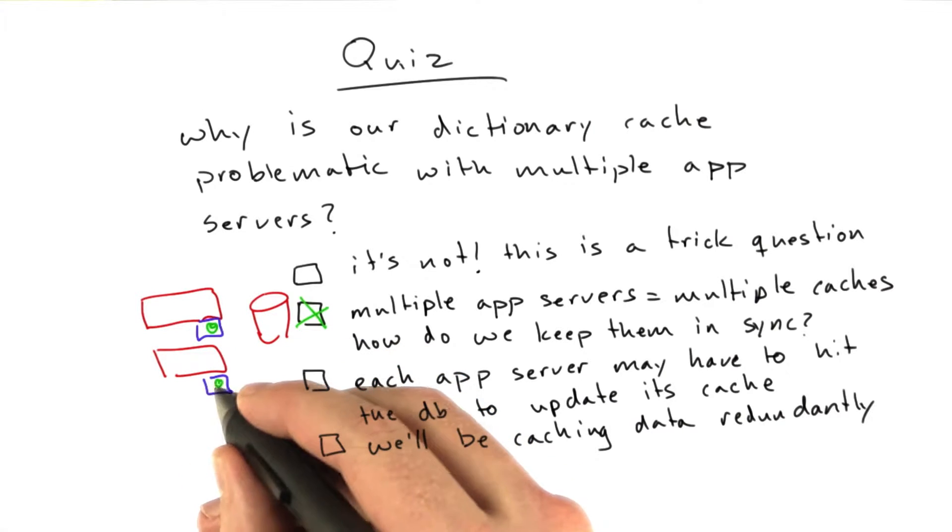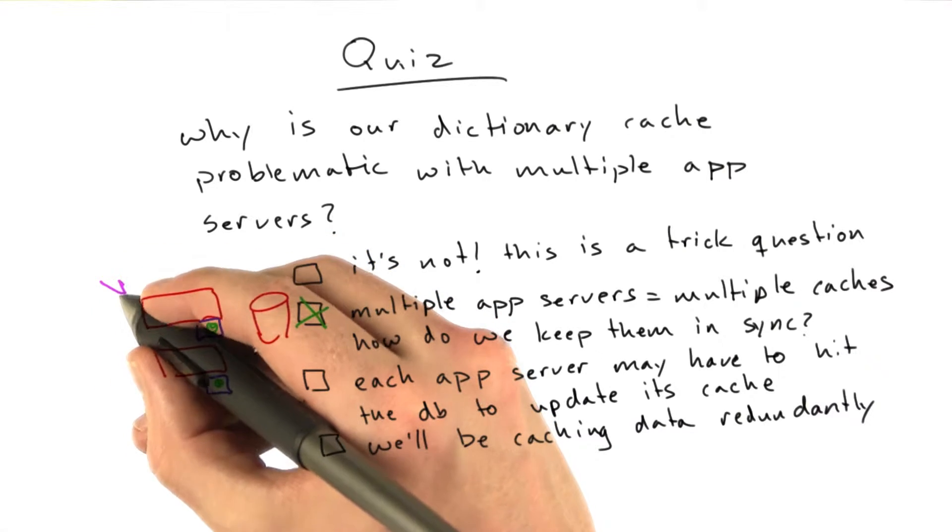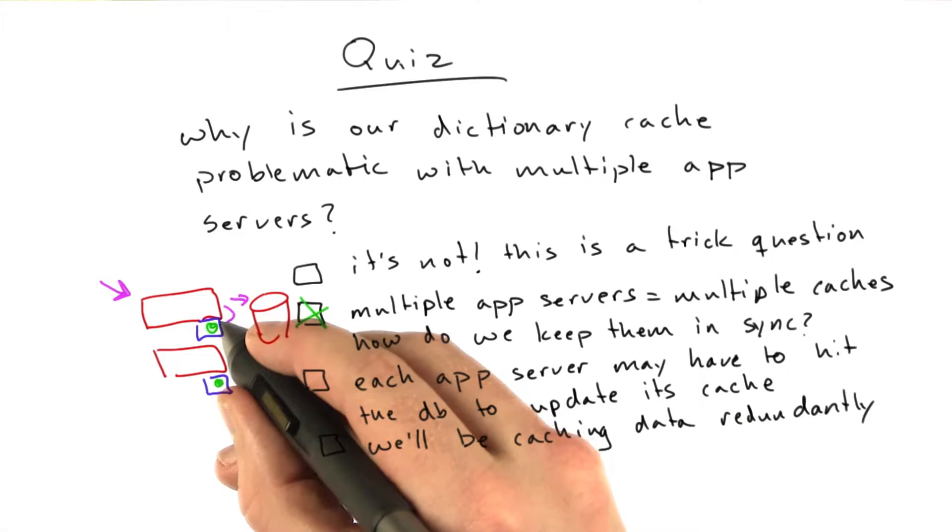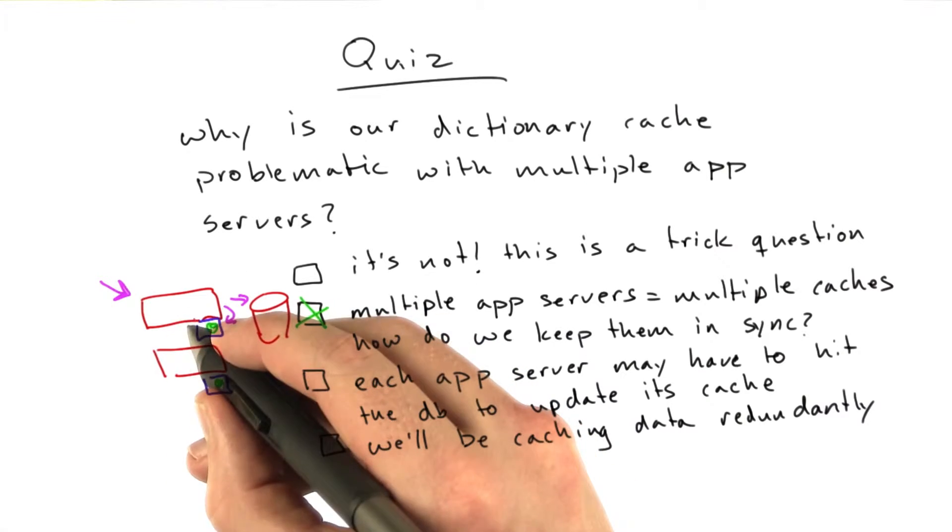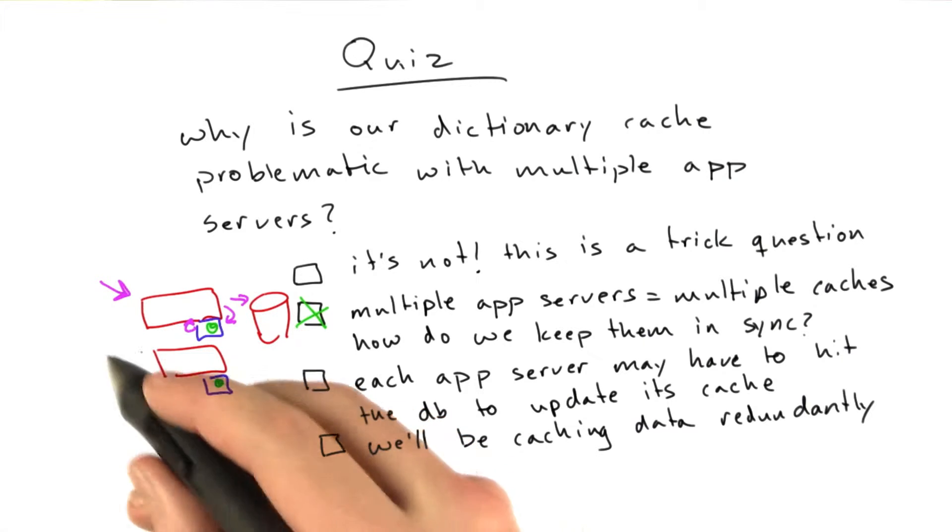Let's say both these caches are warm. They've got their stuff. Let's say a post comes in that results in a database write, which results in a refreshing of the cache. Now we've got one app server with an up-to-date cache and another app server with an out-of-date cache.